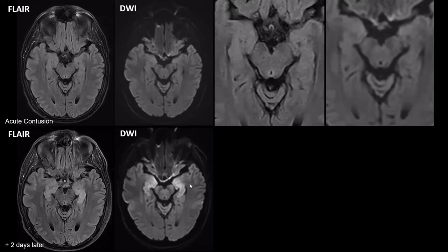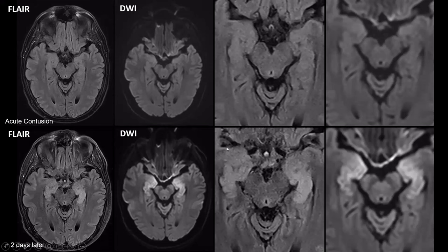We can also check these magnified images. These are FLAIR images and diffusion-weighted images, which were completely normal originally. Then two days later, we have clear swelling and an increase in signal intensity on FLAIR images with diffusion restriction.